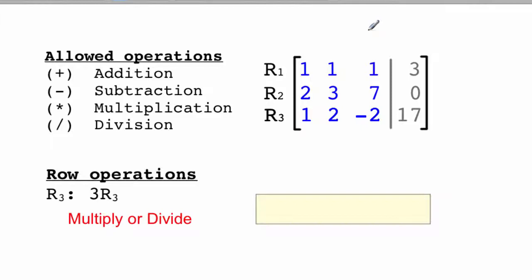Now, the way that you get a matrix into RREF form is through row operations. And you can add, subtract, multiply, and divide a row at a time. Now, what R3 colon 3R3 means is it means take the third row, multiply everything by 3, and then put it back.